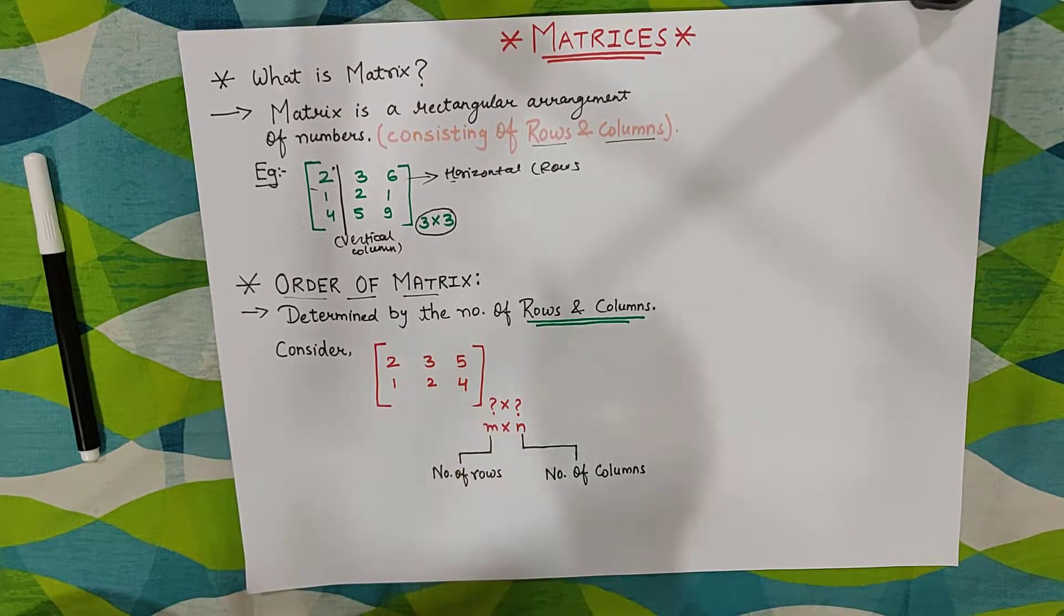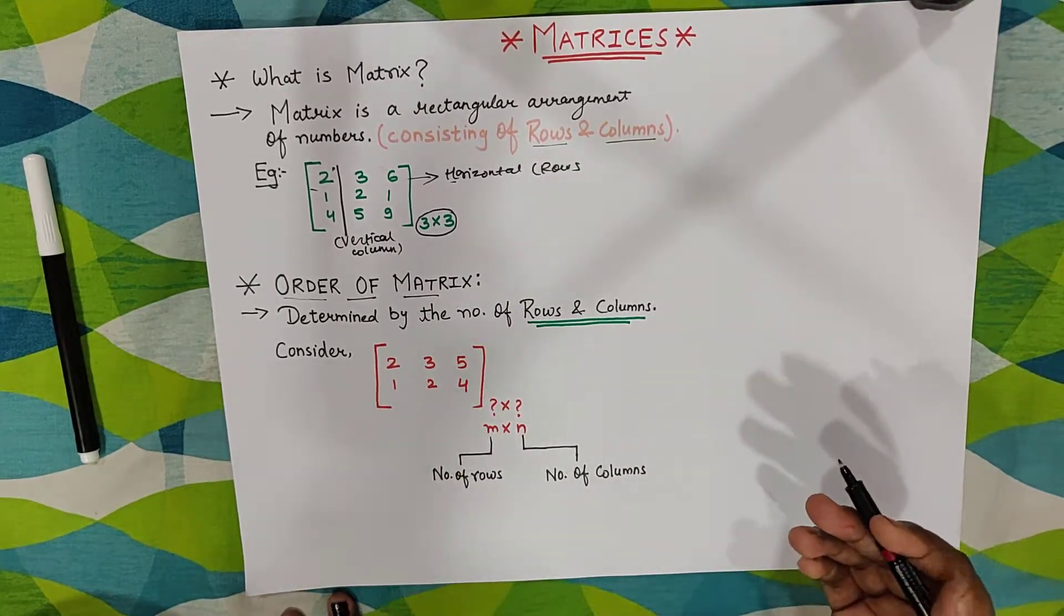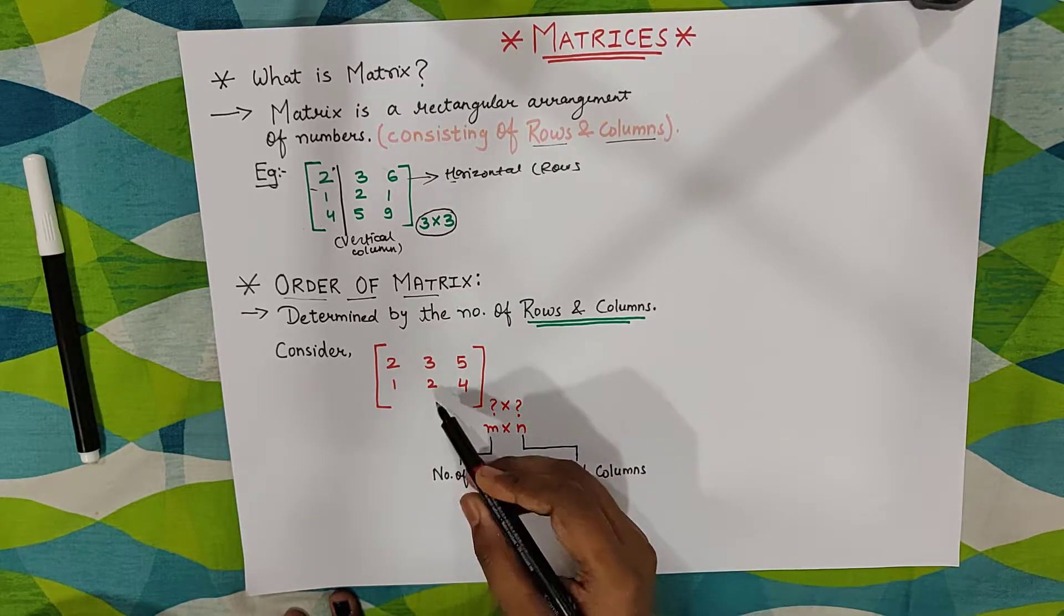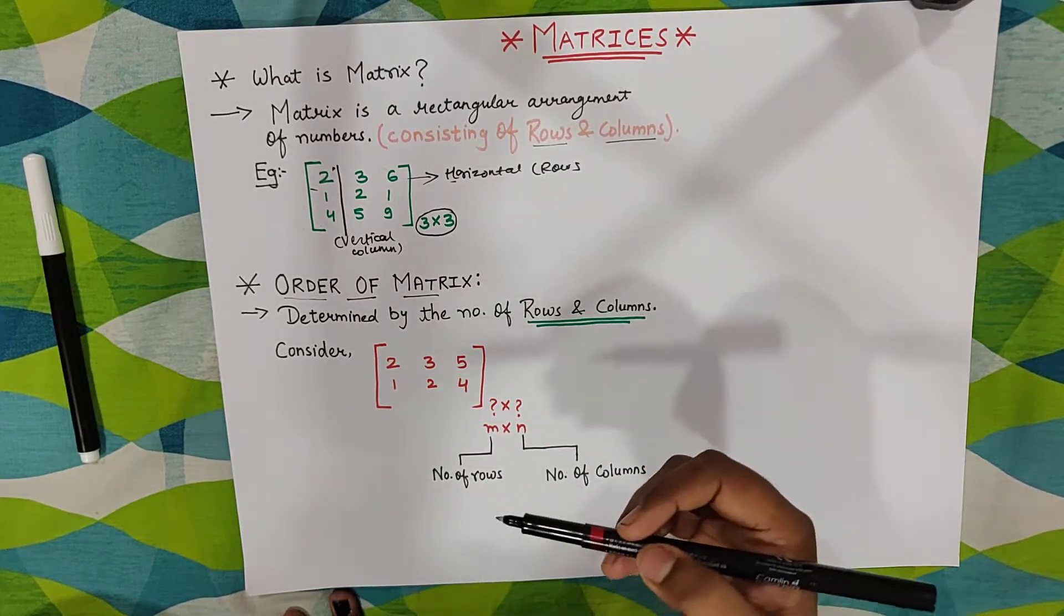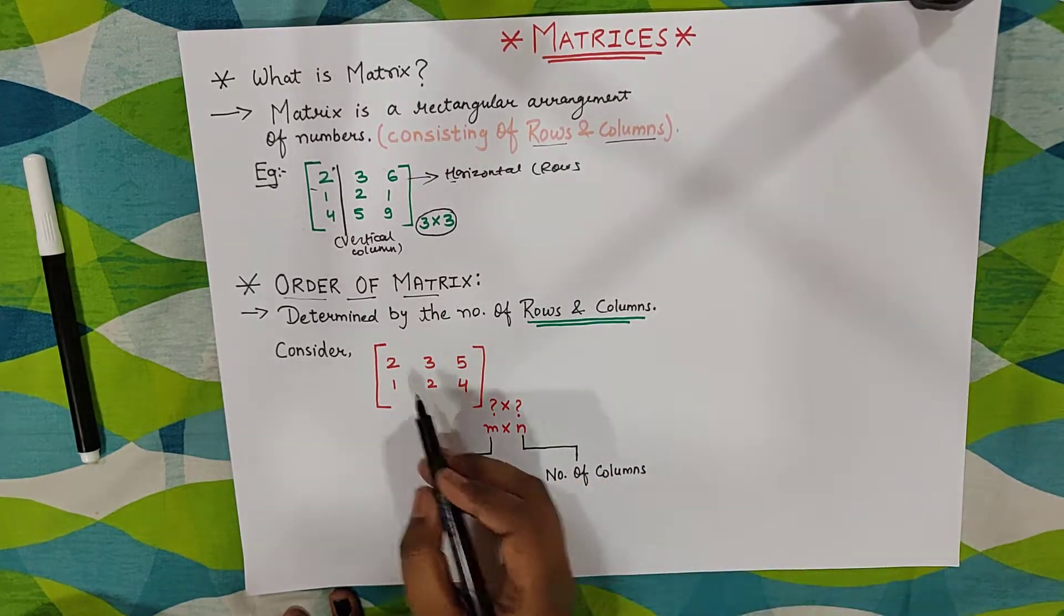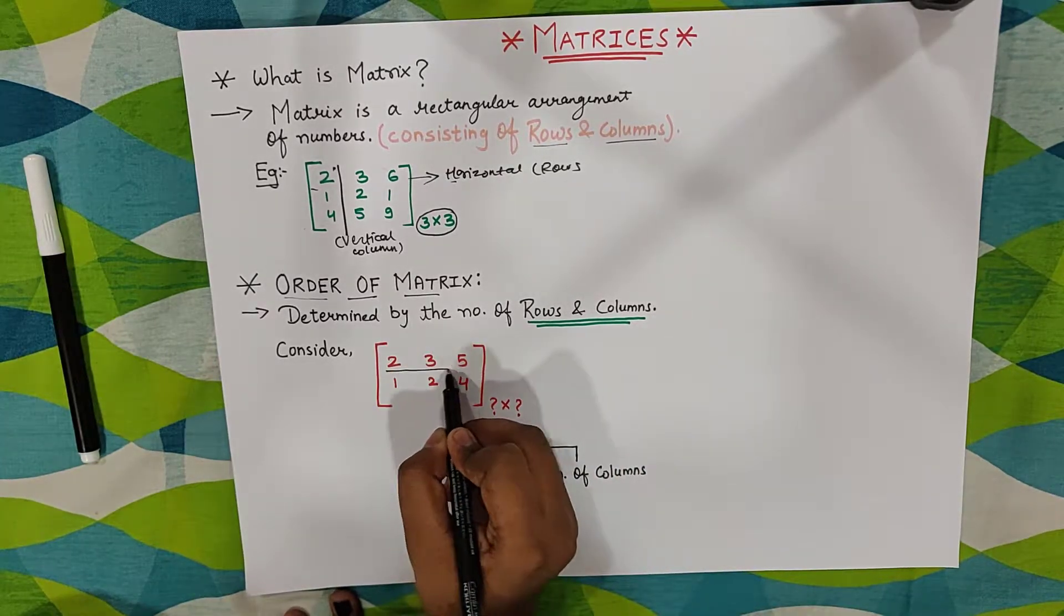So guys, I have given an example. There is a matrix here in which there are rows and columns. I have given you to know how rows and columns are defined and how to identify them. How many rows are shown here? How many horizontal lines are here?